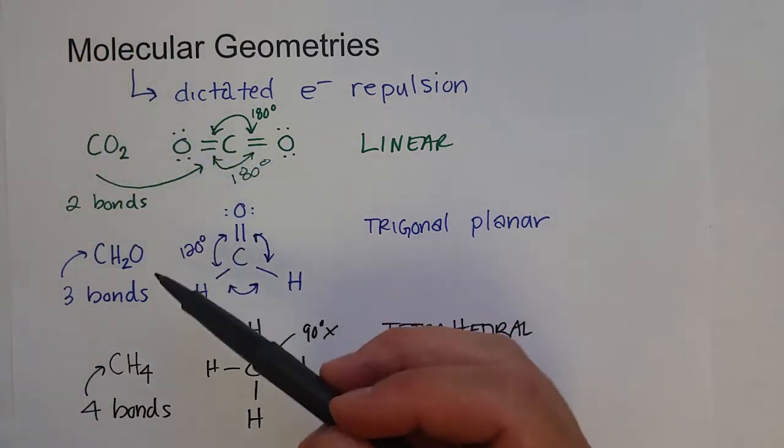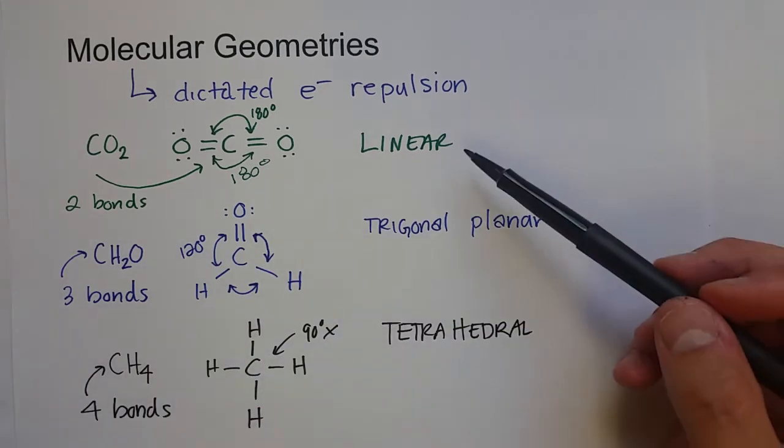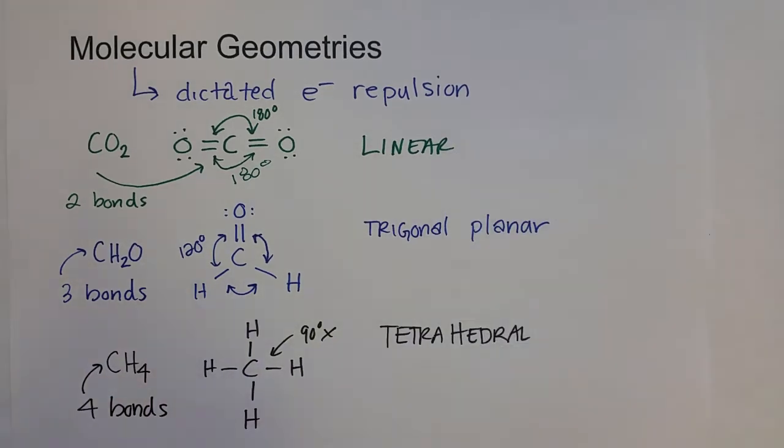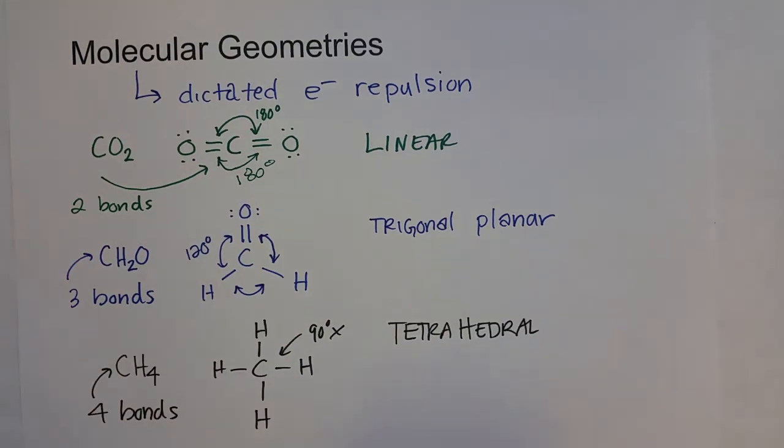Alright, so we can either have two bonds, three bonds, or four bonds that give rise to a linear, trigonal planar, or a tetrahedral. We can also have two other scenarios where we have four electron groups, but not all of them are bonds. So what do I mean by that? Well.